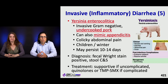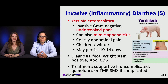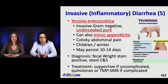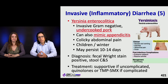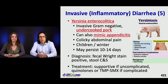Yersinia enterocolitica is an invasive gram-negative found in undercooked pork. It can also mimic appendicitis and is associated with colicky abdominal pain in kids, and can last a long time. If uncomplicated in a healthy, well-nourished person, the treatment is supportive. If complicated, you can treat with fluoroquinolones or trimethoprim-sulfamethoxazole.